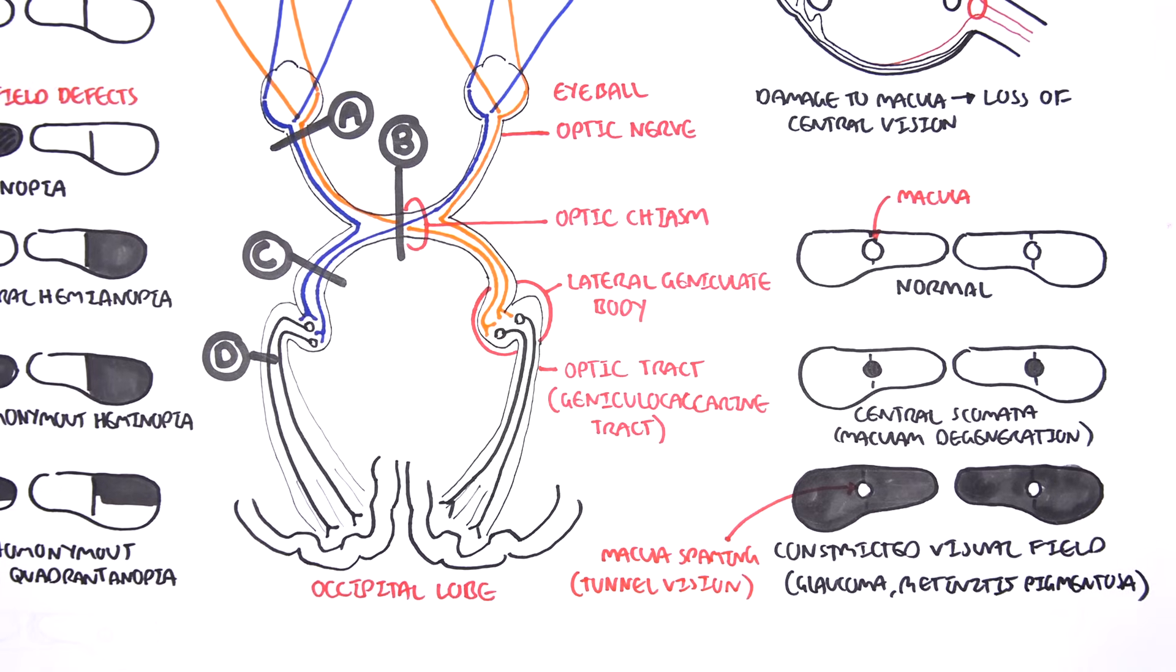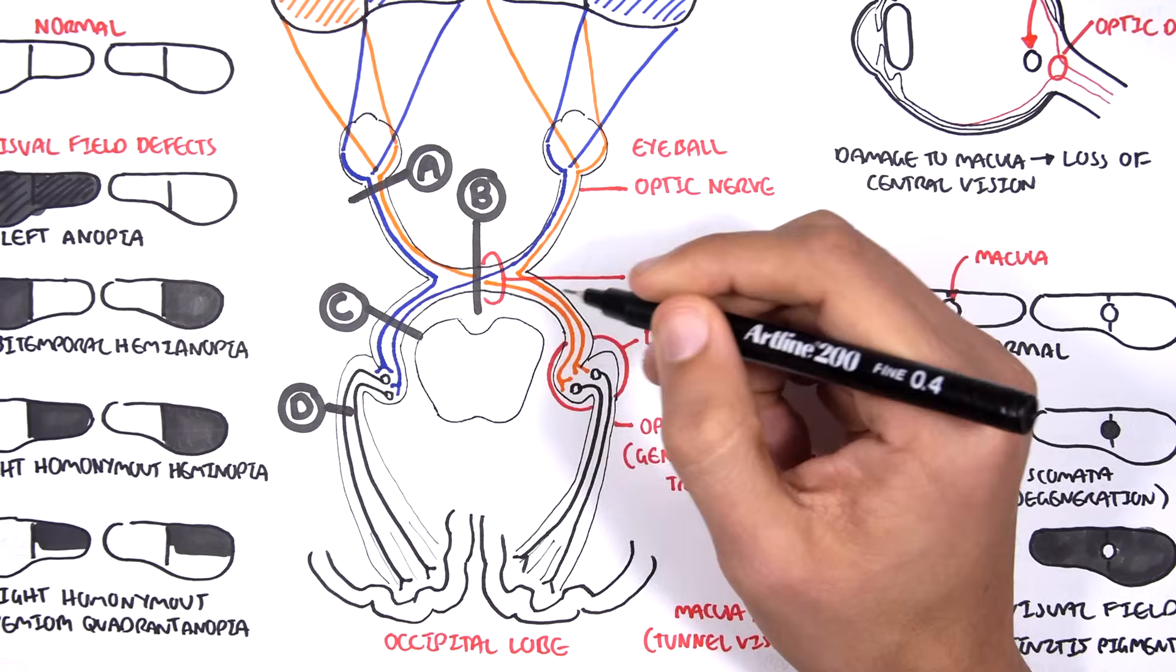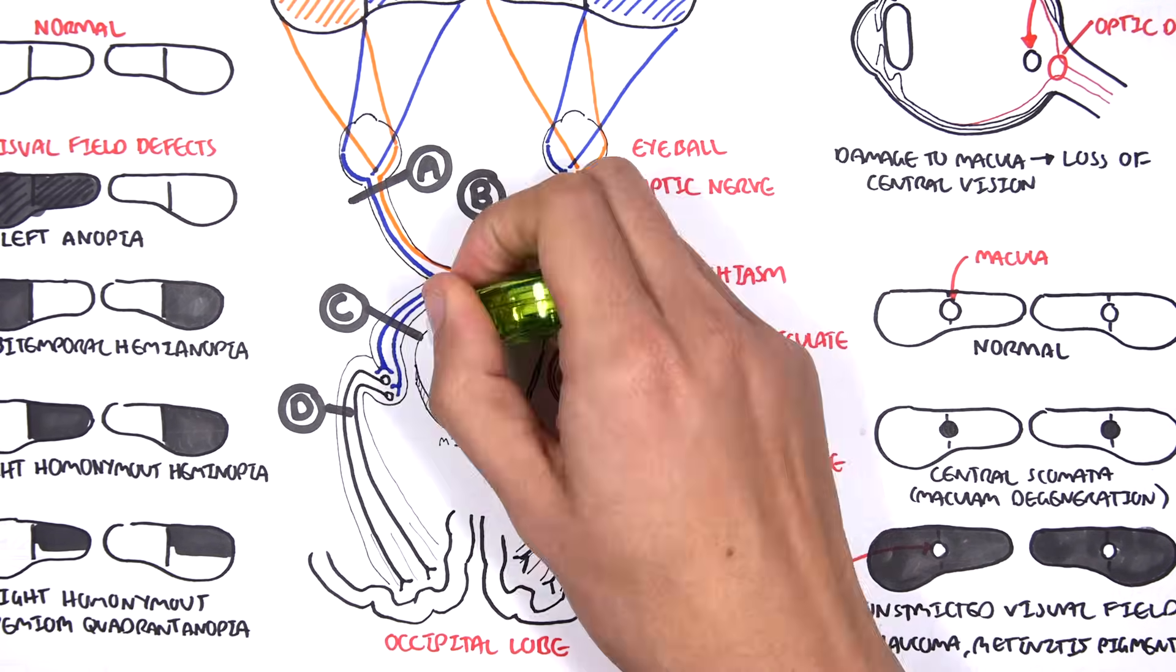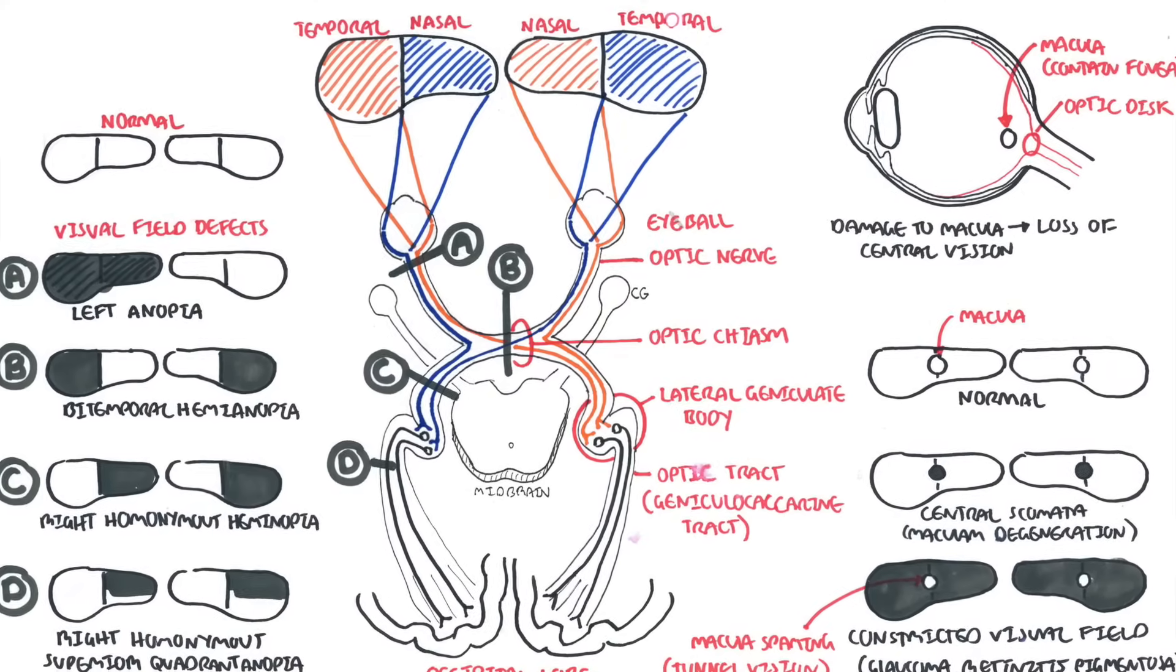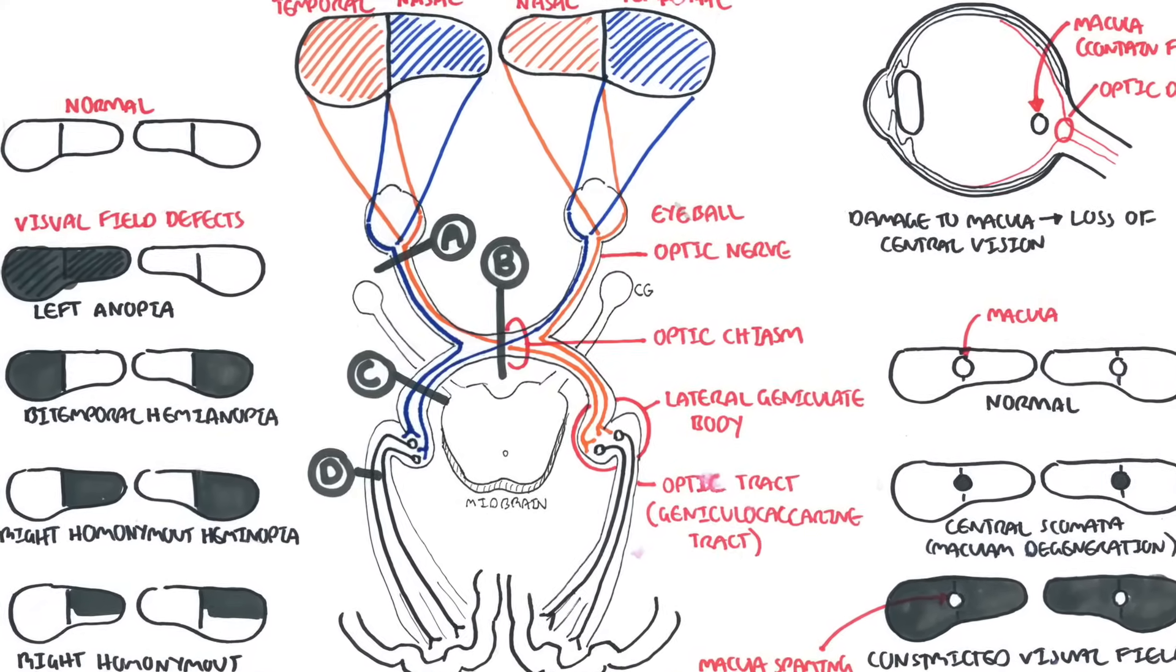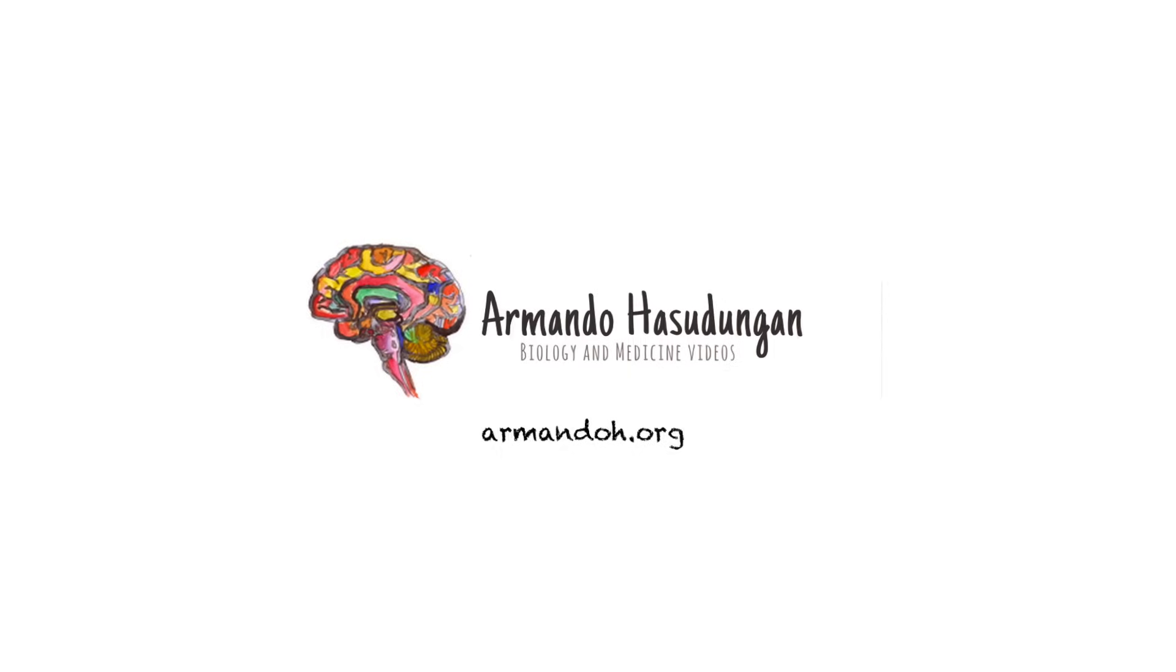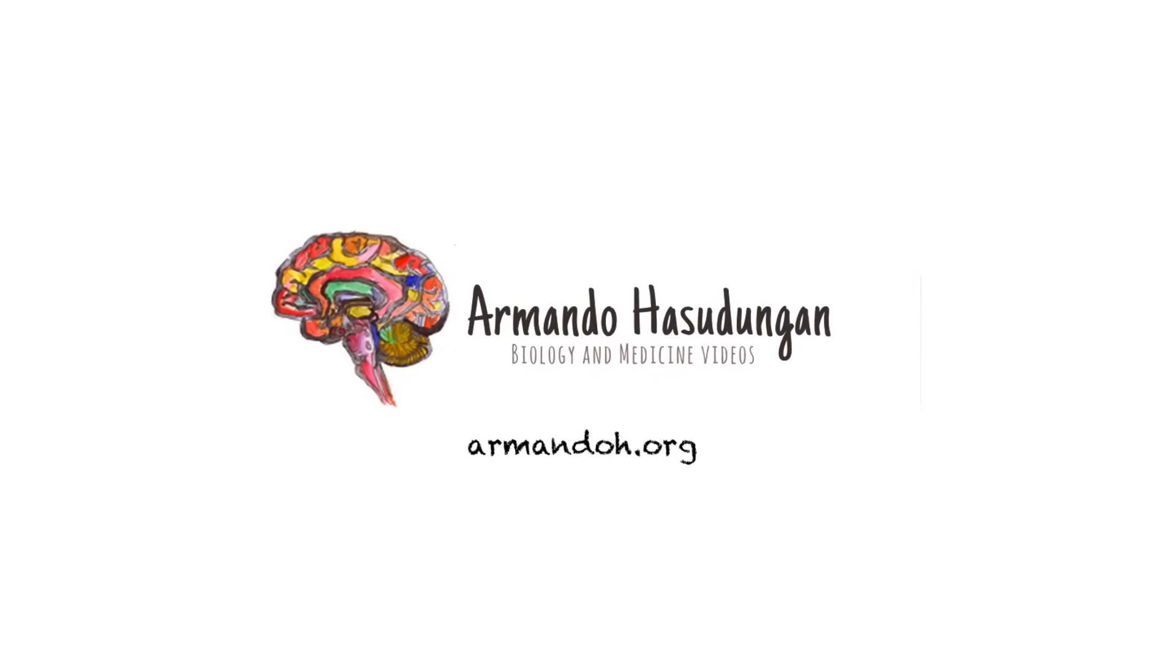Now just to finish this diagram off, here is the midbrain, an area where the optic nerve also brings information to. This area is primarily involved in reflexes to do with the eye, such as the blink and light reflex.